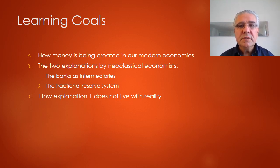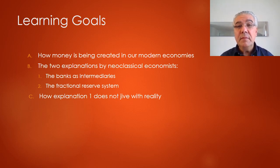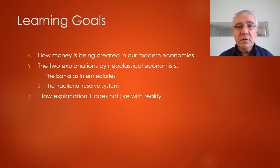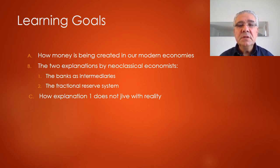What are the learning goals of this section? I want you to be left with an understanding of how money is being created in our modern economies. The two main explanations put forth by neoclassical economists — that is, mainstream economists — being the banks as financial intermediaries and the fractional reserve system. And then the last piece of this presentation would be to look at how that first explanation does not really jive with reality.